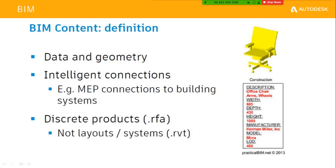In Revit, the recognizable format is .rfa, and the project file is .rvt. When exporting a family from Inventor to Revit, it will be recognized as a .rfa file. We need to give information like the size and data to identify what type of component it is — for example, what kind of chiller it is, who is the manufacturer, what is the model, and finally the level of development.